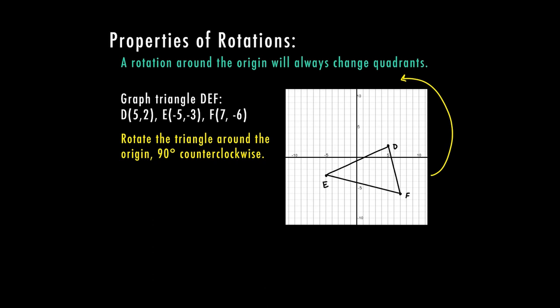So let's start with D. D is right five, up two. So this time I'm going to go up five, left two. So here's my new D. My E is at negative five, negative three. So I'm going to go down five, left three. And my F is at seven, negative six. So this time I'm going to go up seven, right six.